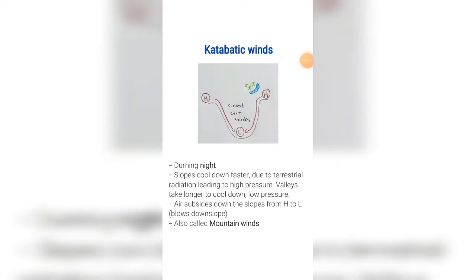Katabatic winds. These winds occur during the night. An easy way to remember the difference between anabatic and katabatic is that cats are more active during the night, so katabatic winds happen during the night. The slopes cool down faster due to terrestrial radiation, therefore a high pressure is formed on the slopes. The valleys take longer to cool down, therefore there is a low pressure in the valley. The air subsides down the slopes from the high pressure to the low pressure, so it blows downslope. These winds are also called mountain winds.